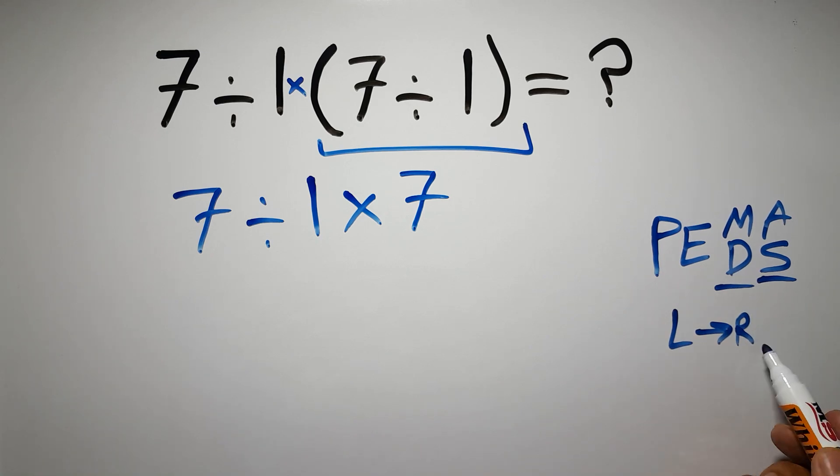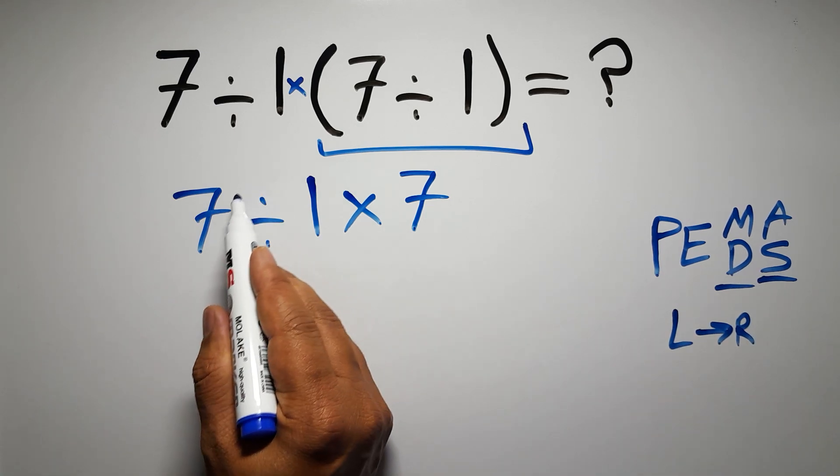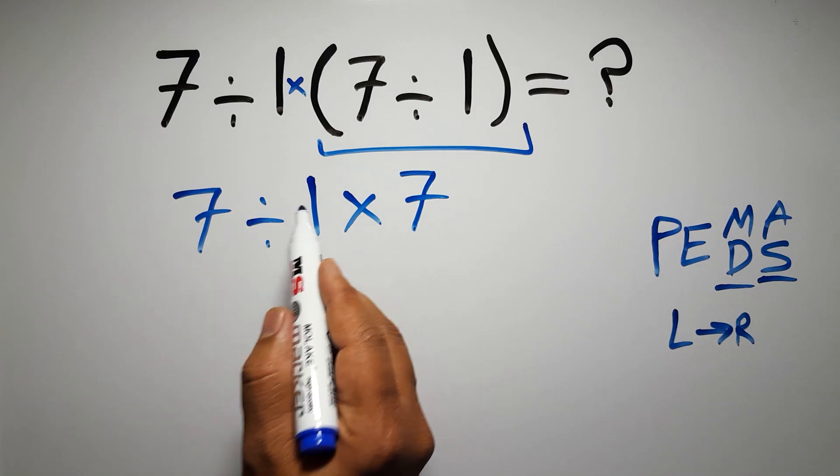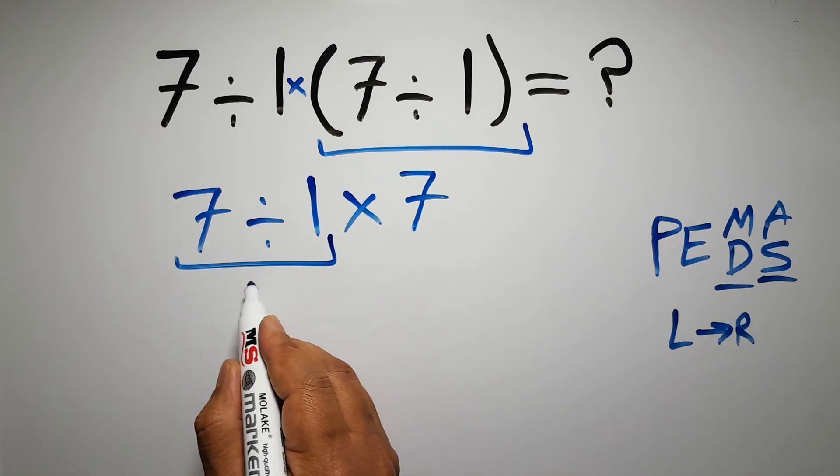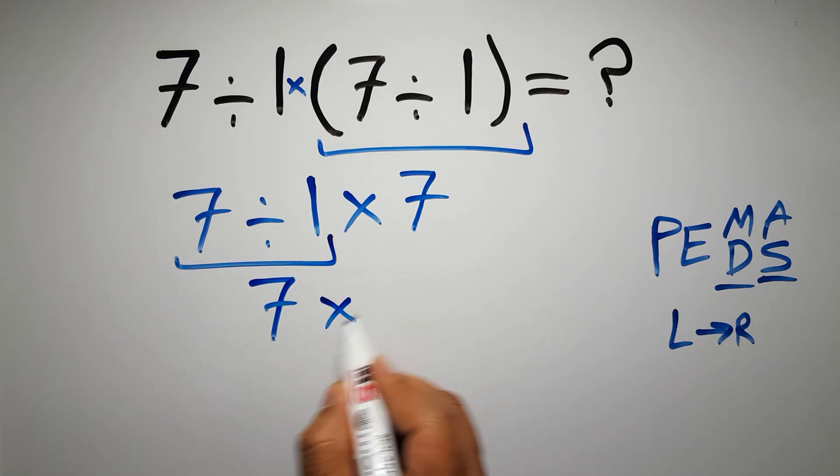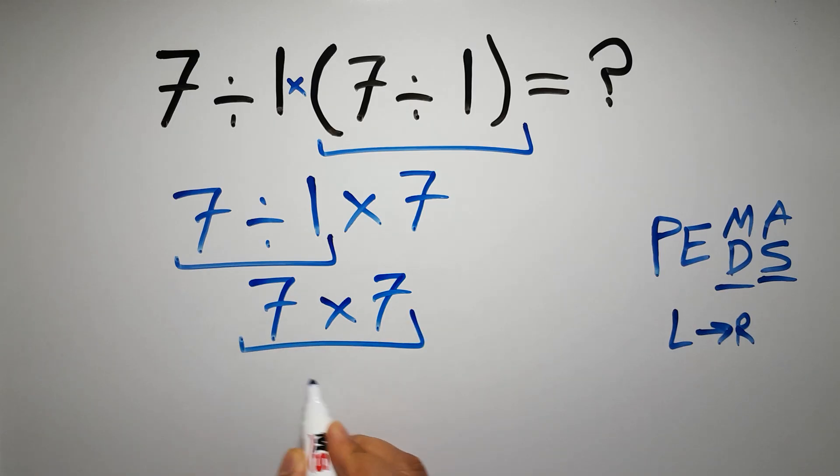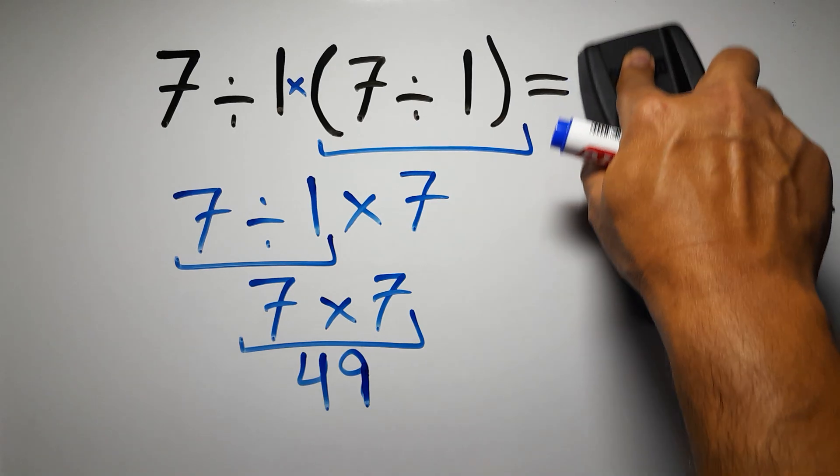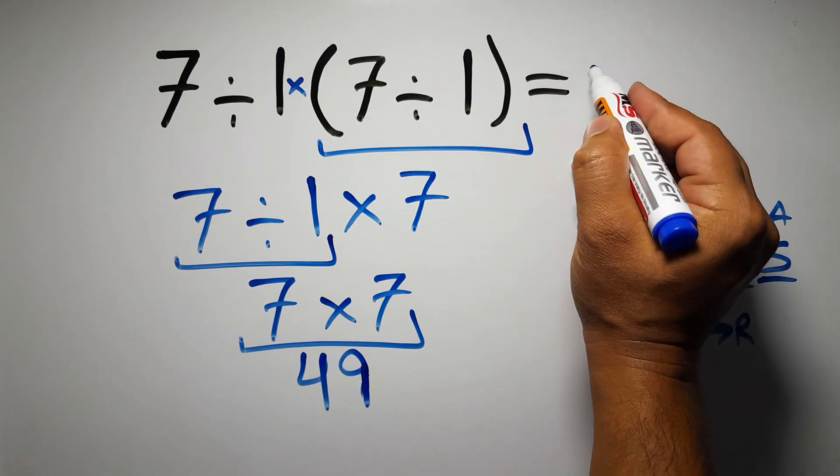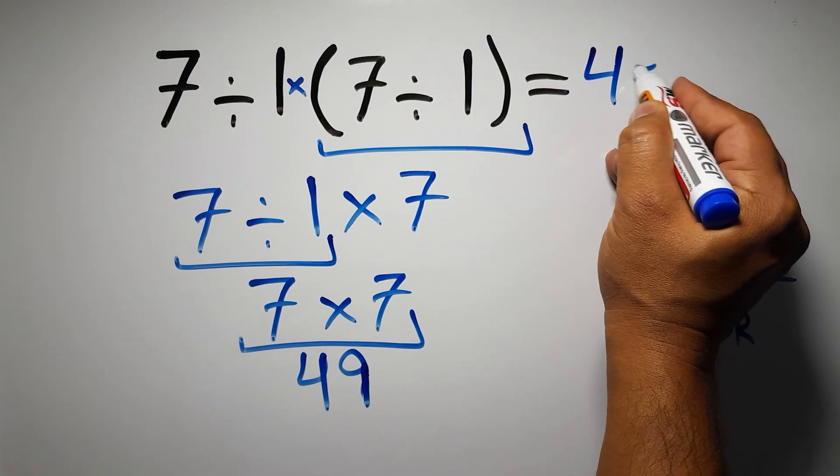So here first we have to do this division. 7 divided by 1 gives us 7. And 7 times 7 is 49, and this is our final answer to this problem. The correct answer is 49.